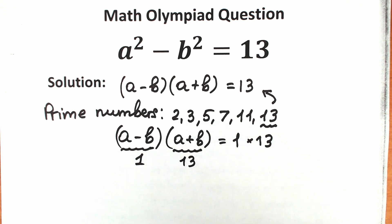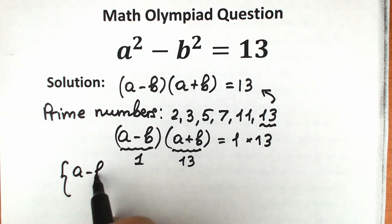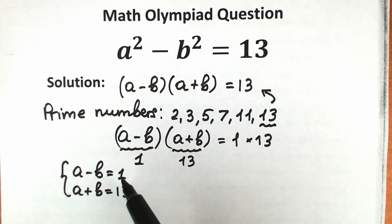Okay, so let's write our system of equations. The first equation is a minus b equals 1, and a plus b equals 13. How can we solve it? Let's add the first equation to the second equation. Then we can easily cancel this minus b and plus b.